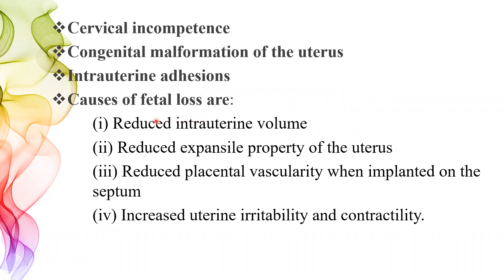Causes of fetal loss include reduced intrauterine volume, reduced expansile property of the uterus — so when the fetus is growing and the uterus cannot expand enough — and reduced placental vascularity when implantation occurs on the septum. When there is no sufficient blood supply to the fetus, there can be ischemia, necrosis, and ultimately abortion. Increased uterine irritability and contractility can also cause the uterus to contract excessively during implantation, resulting in abortion.